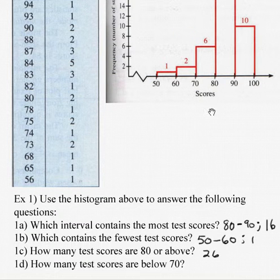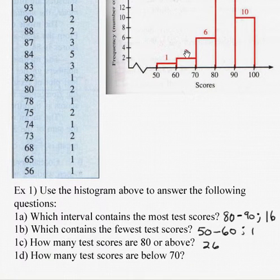How many test scores below 70? Well here's 70. There's two plus one more, or three.